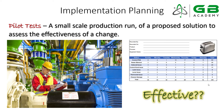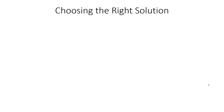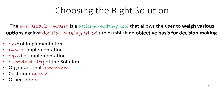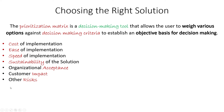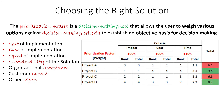Once you've demonstrated that a solution will effectively address your problem, you might still face the question of how to choose the right solution. The Greenbelt body of knowledge discusses a tool called the prioritization matrix — a decision-making tool. The best way to make an objective decision is to define your decision-making criteria and rank your different options. Criteria could include cost, ease of implementation, speed or timeliness, estimated sustainability, level of organizational acceptance, customer impact, and associated risks like audit or compliance risk.